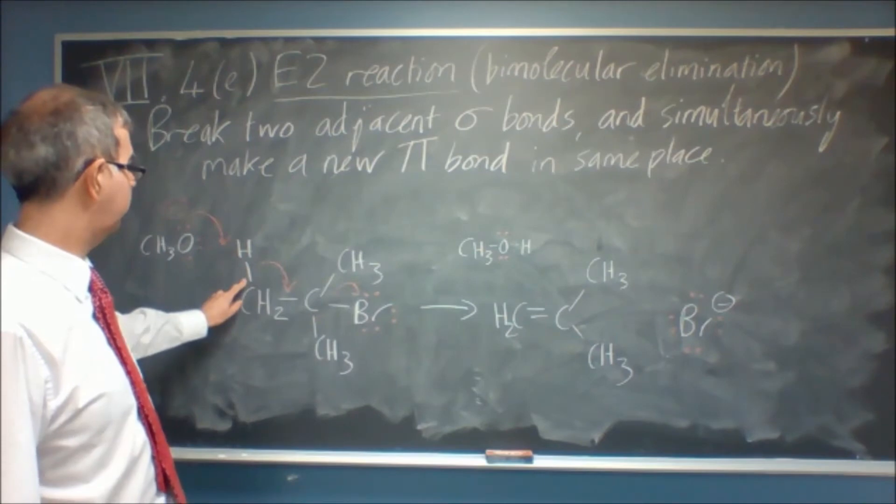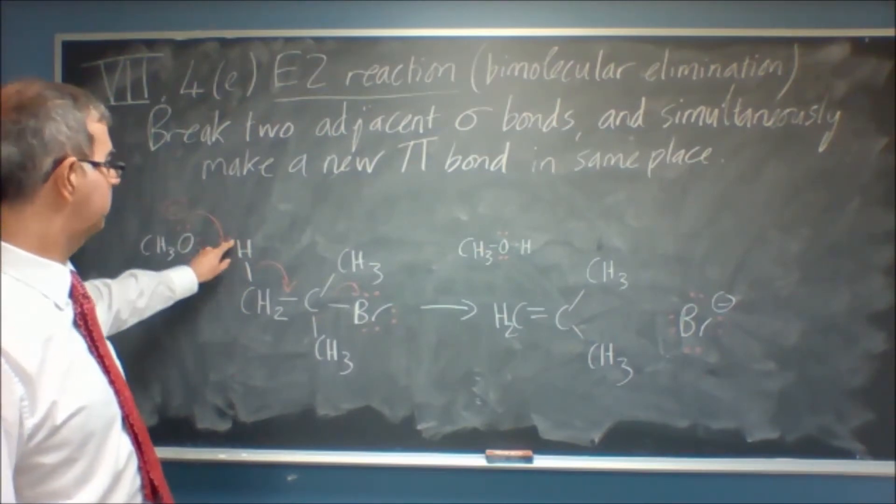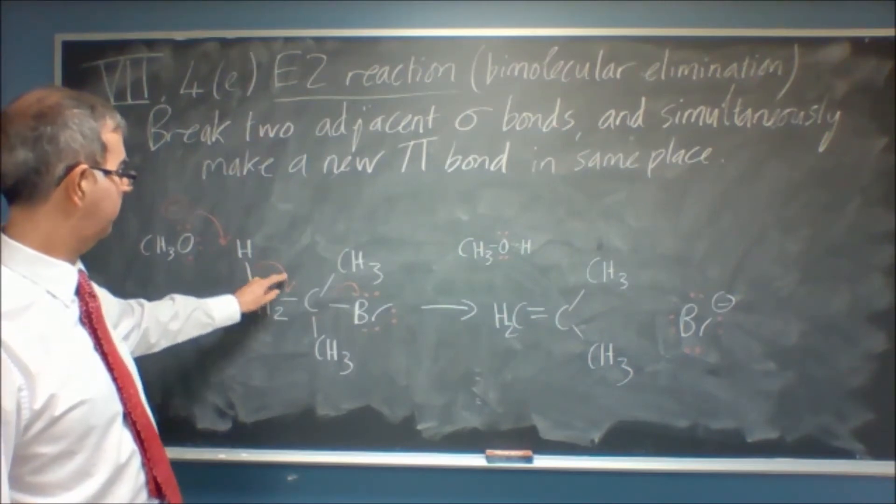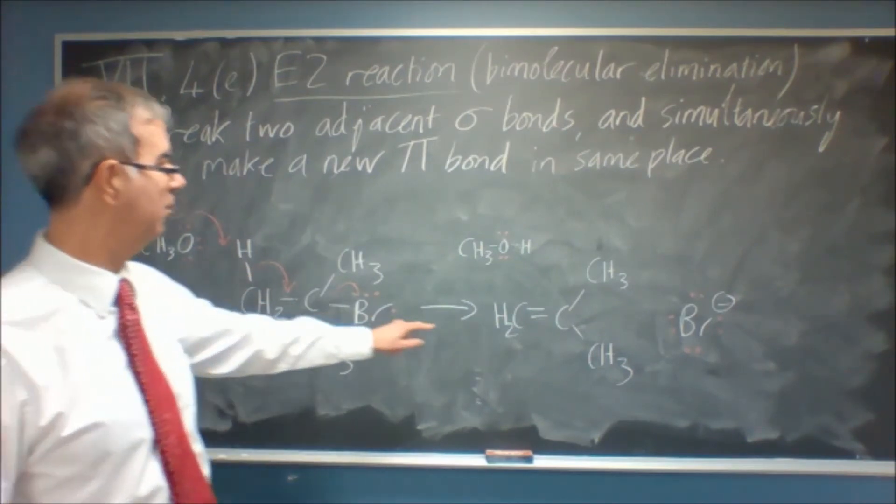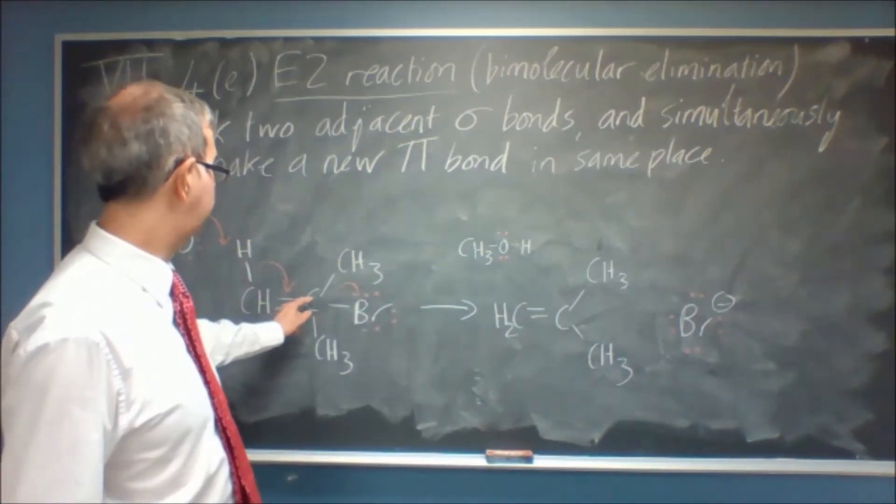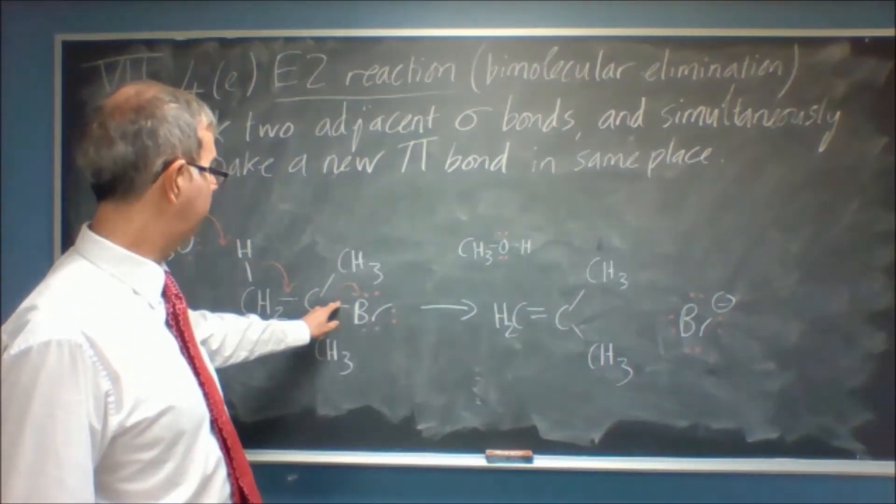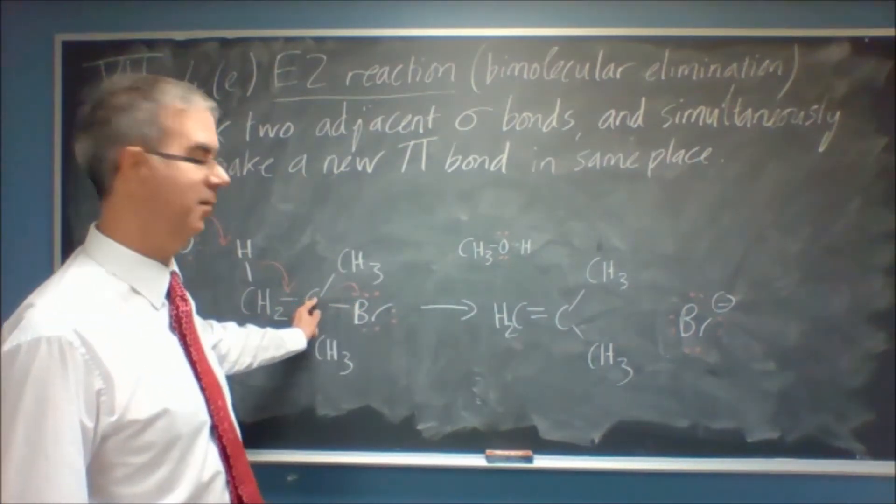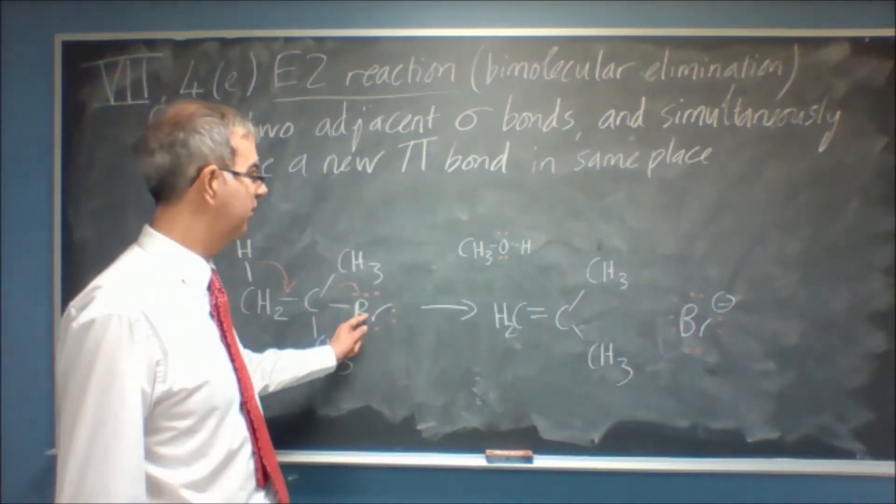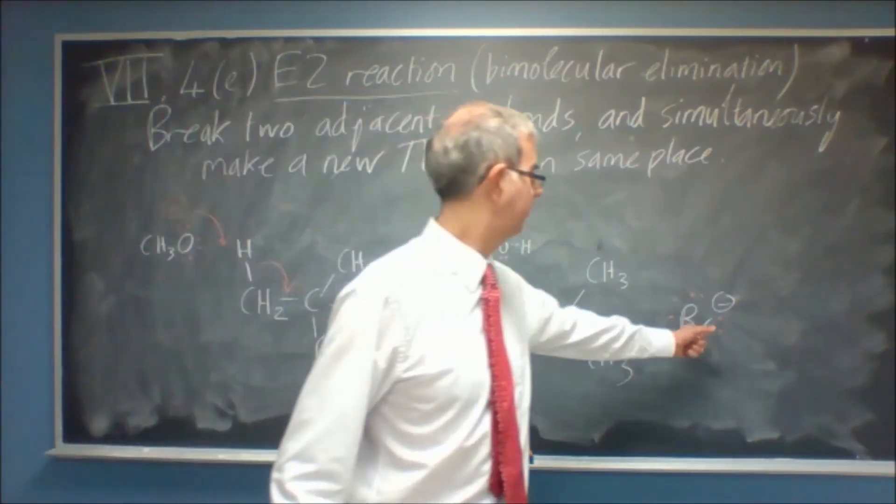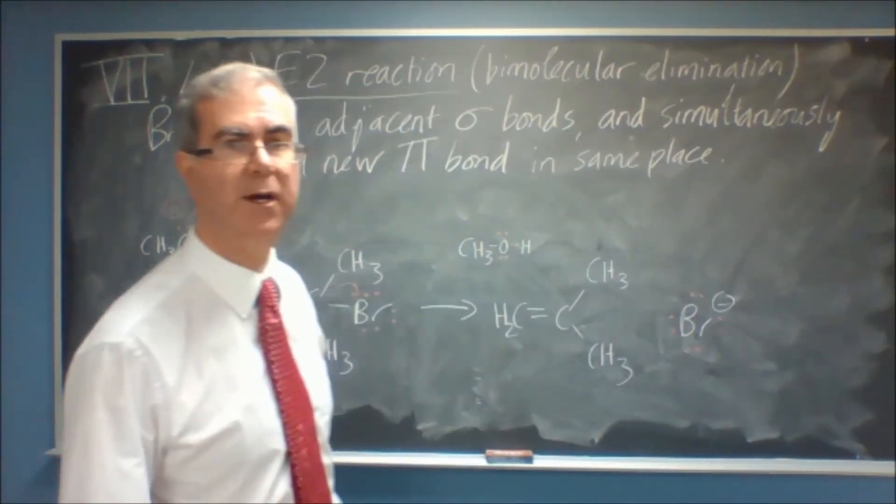We break this bond here in order to do that. Then the pair of electrons comes down here and forms the new pi bond. That's the key part of it. And then we're breaking this C-Br bond in order to make room for the pi bond. This has to leave. Carbon can't form more than four bonds, remember. And then we end up with Br minus.